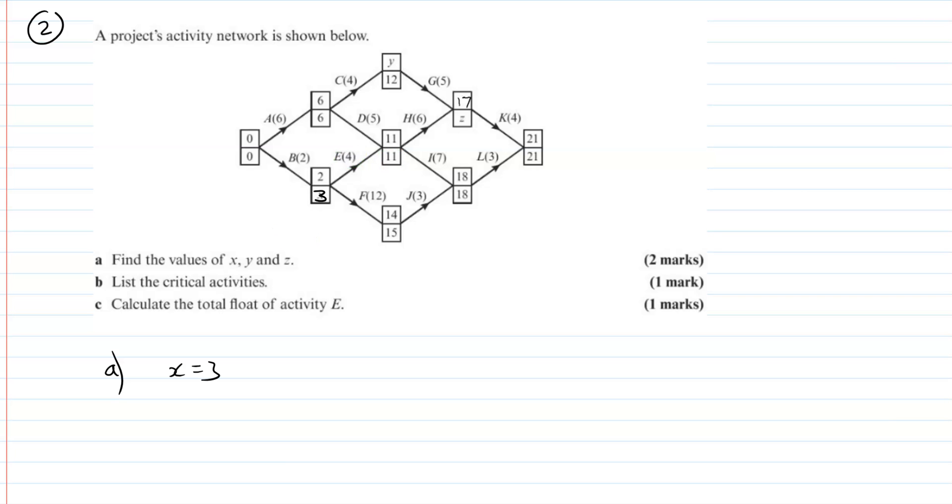If you think about that, when you put your three in here, F takes 12, doesn't it? So this is going to have to be finished by 15. So 3 plus 12 is 15, and also 2 plus 12 is 14, so that makes sense too. Okay, this one, if this finishes at three and this takes four, this can finish a bit later, can't it? The E has got some float, which is actually what we're going to work out later on.